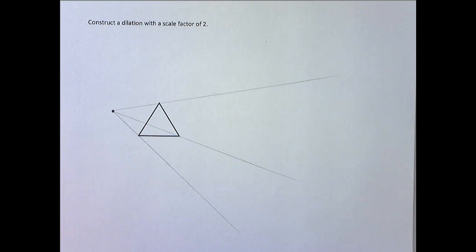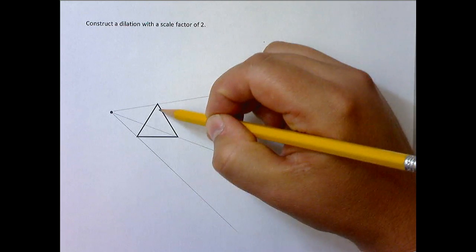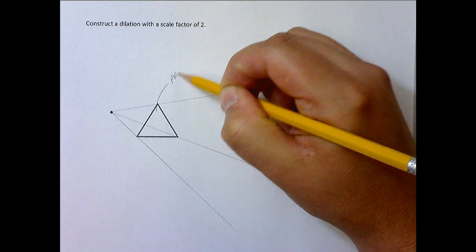Now what we're going to do from here is use our compass. And this is just like doubling the length of a segment. We just have to do it three times. And then what we're going to do is connect those three vertices and create a new triangle. Another thing to remember, the original is called your pre-image.